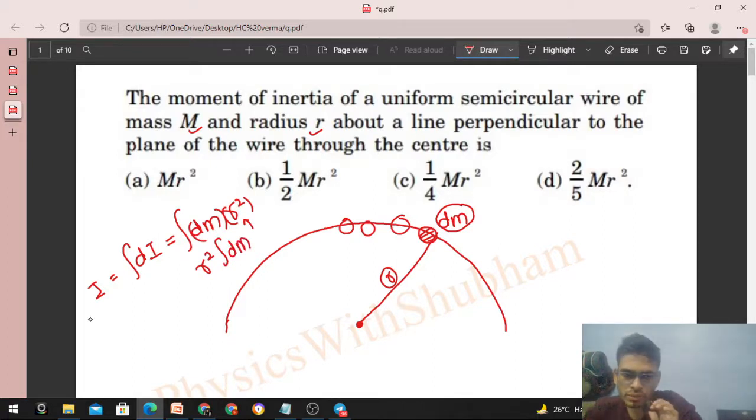Total mass of this semicircular ring, that is M, into r square. So this is the moment of inertia. Now you can also generalize this a bit: if all particles of a body are at a fixed distance from the axis of rotation.